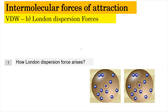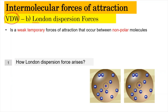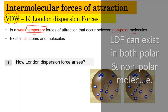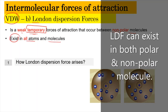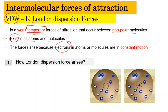Now we're going to move on to the next Van der Waals force: the London dispersion forces. London dispersion forces are a weak, temporary force — sementara. Unlike dipole-dipole forces which involve a permanent dipole, London dispersion forces are weak and temporary. They occur between non-polar molecules but can also happen in polar molecules, meaning they exist in all atoms and molecules whether polar or non-polar. These forces arise because electrons in an atom or molecule are in constant motion.